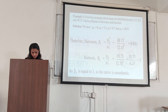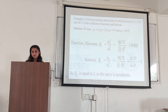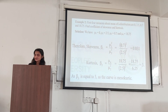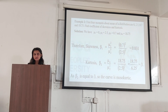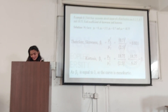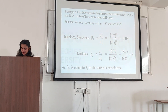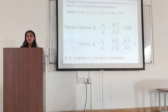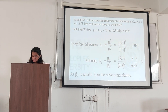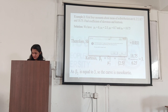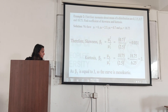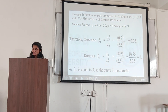Given: mu 1 is 0, mu 2 is 2.5, mu 3 is 0.79, and mu 4 is 18.75. Skewness is denoted by beta 1 equals mu 3 squared divided by mu 2 cubed. Kurtosis beta 2 equals mu 4 divided by mu 2 squared. As beta 2 is equal to 3, the curve is mesokurtic.